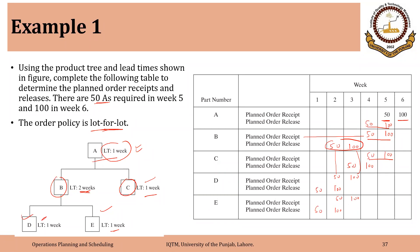Please go through this example. It is simple, but if you have any confusion you can ask, because the rest of the examples will be slightly more complex and will include more elements of MRP. We are still discussing lead time offsetting — placing the order earlier according to the lead time.